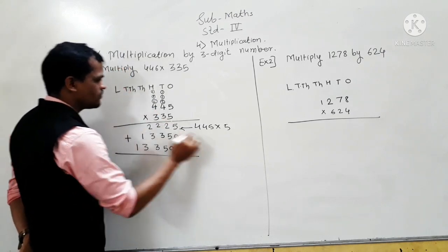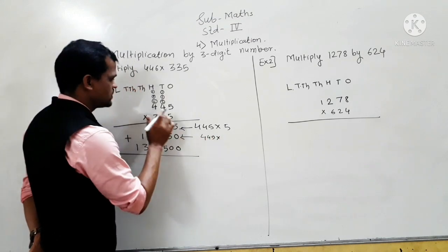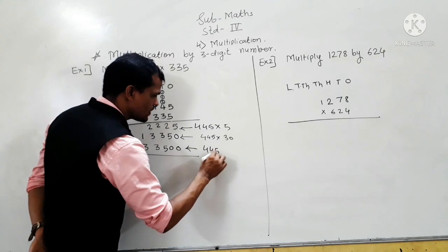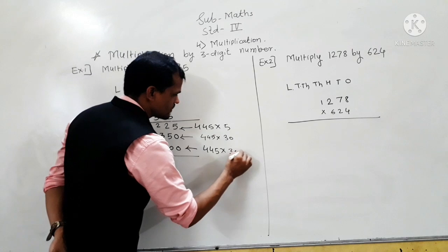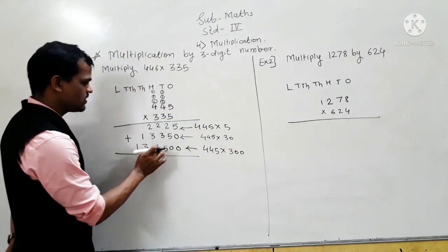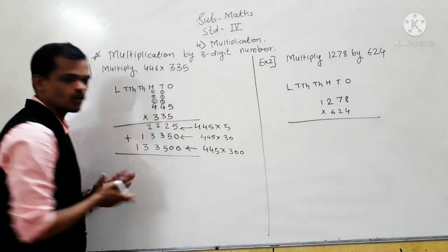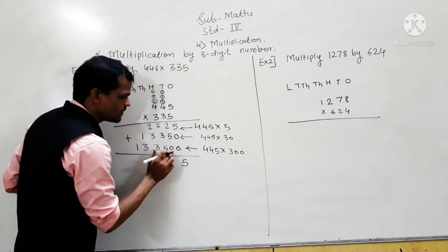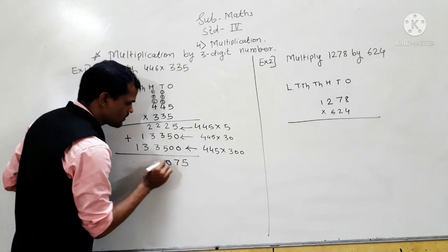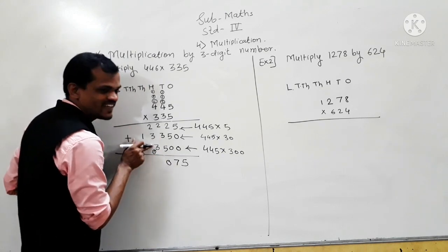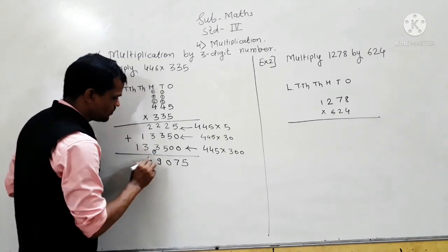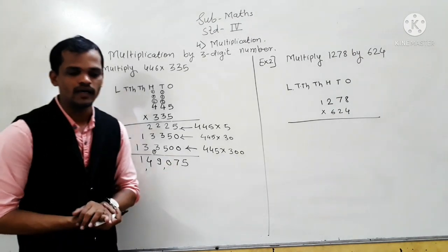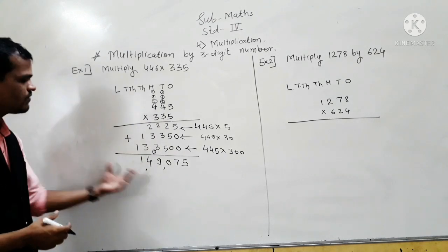If you multiply 445 by 300, you get 1,23,500 as the product. Now, add these 3 products to get the final answer. Let's start: 5 plus 0 plus 0 is 5. 2 plus 5 plus 0 is 7. 2 plus 3 is 5. 5 plus 5 is 10 — write 0 and carry 1. 2 plus 3 is 5, 5 plus 3 is 8, 8 plus 1 is 9. 1 plus 3 is 4, and then 1. So the answer is 1,49,075.